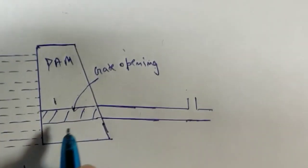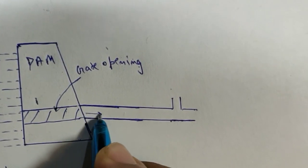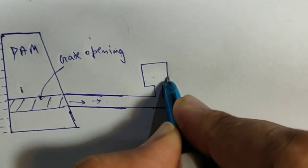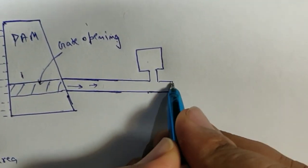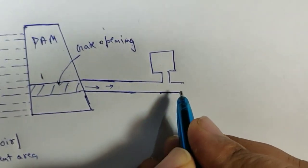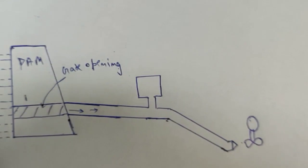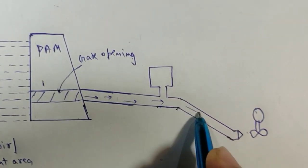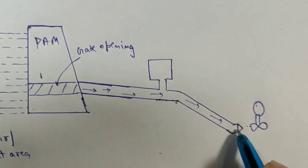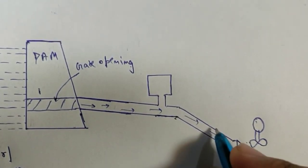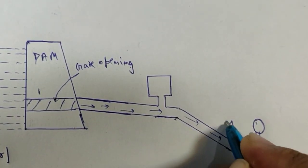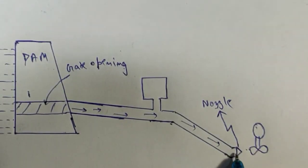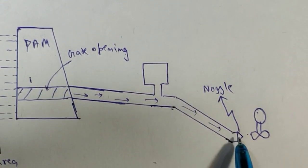Water flows from the gate opening and goes into this pipe. At the end of the pipe we have our nozzle. The nozzle is used to decrease the area of flow of water so that the velocity of water increases.